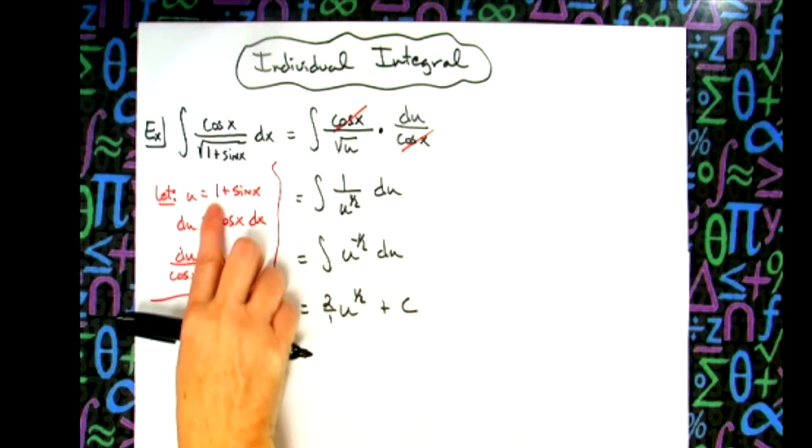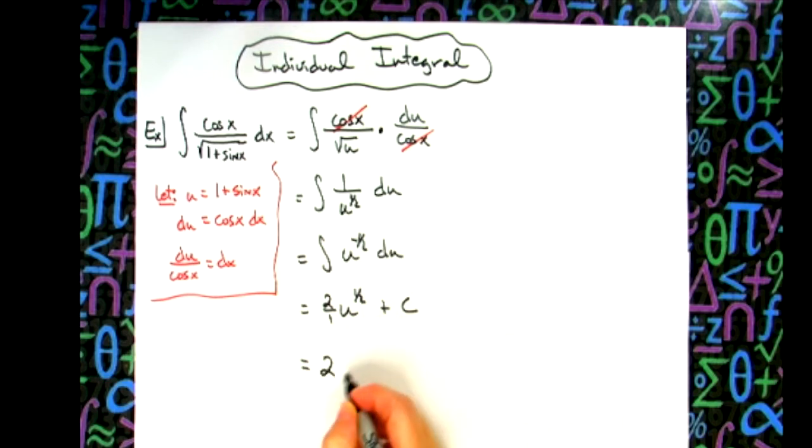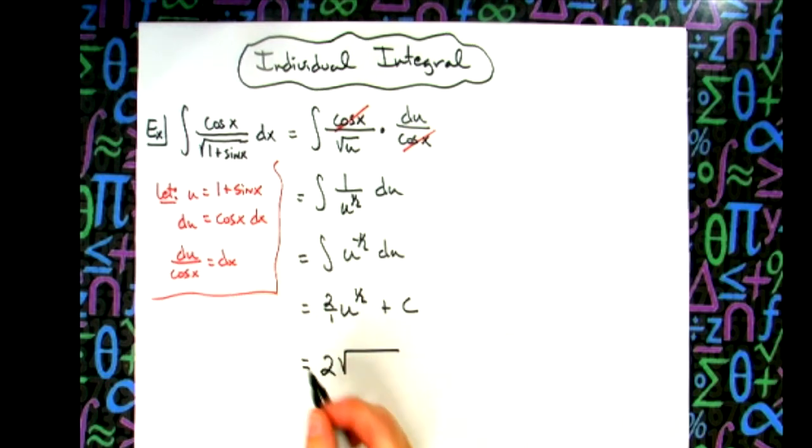Last step, we're going to replace U, and I'm going to go ahead and turn this back into a radical, and then clean that up so we just have a 2. So we'll have 2 square root of, replacing U, 1 plus sine x, and then plus c.